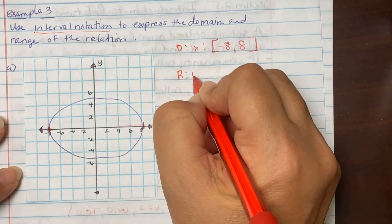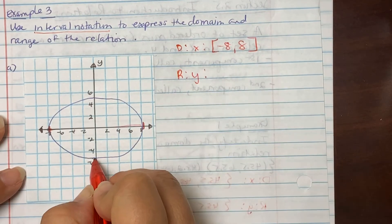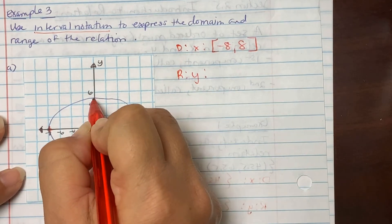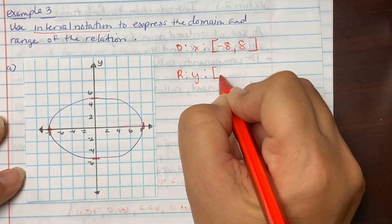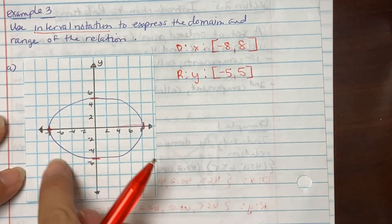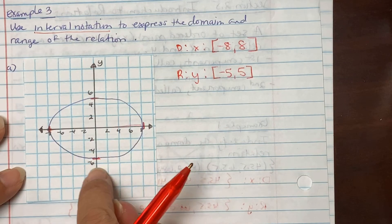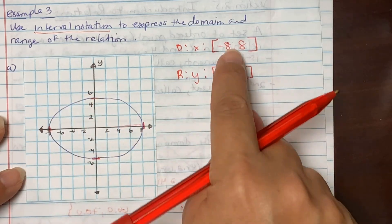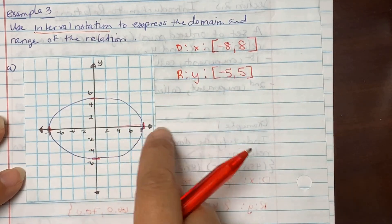The range, which are your y values, went from negative 5 to positive 5, so bracket [-5, 5]. If the ellipse had been shown as cut lines, dashed pieces, then we would use parentheses instead of brackets.